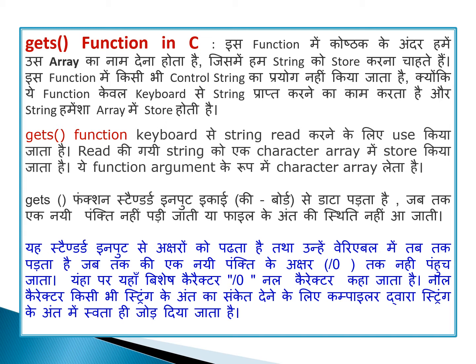The gets function in C language: in this function, in the parentheses, we have to give the name of the array in which we want to store the string. The argument in the parentheses is the name of the array where we want to store the string. In this function, we do not use any control string — meaning we do not use format specifiers like %d for integer, %f for real, or %c for character type.